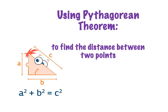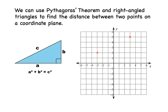Without further ado, let's get started. The idea is, when we have two points on a coordinate plane, we can apply what we learned about Pythagoras' Theorem and create a right-angled triangle with these two points. Here we have a right-angled triangle connecting our two points, and we can see that the distance between these two points is the hypotenuse of our right-angled triangle.